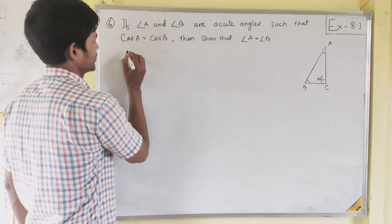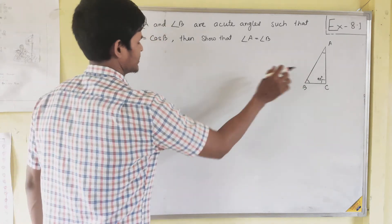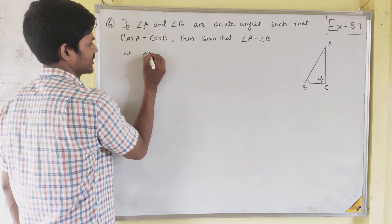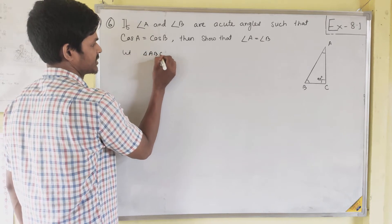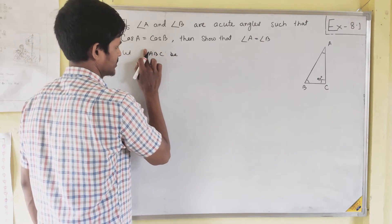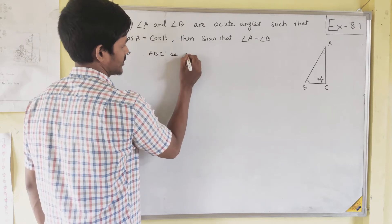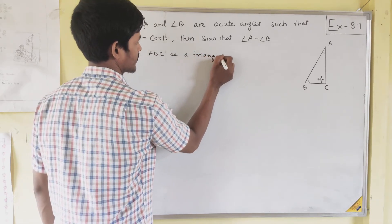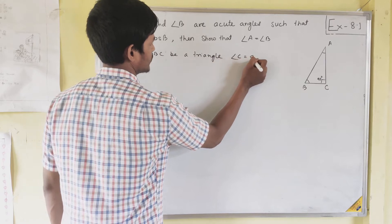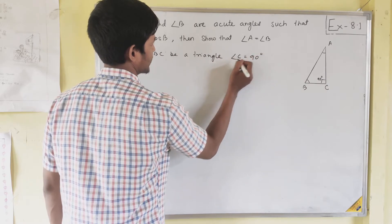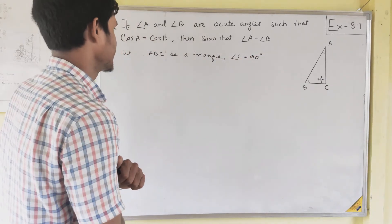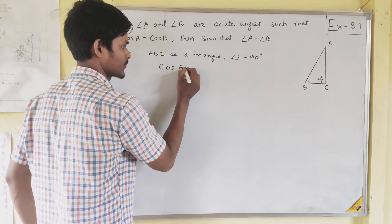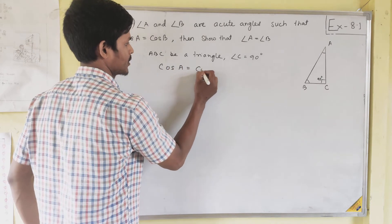First, let triangle ABC be a triangle with angle C equal to 90 degrees. What is given here is cos A equals cos B.